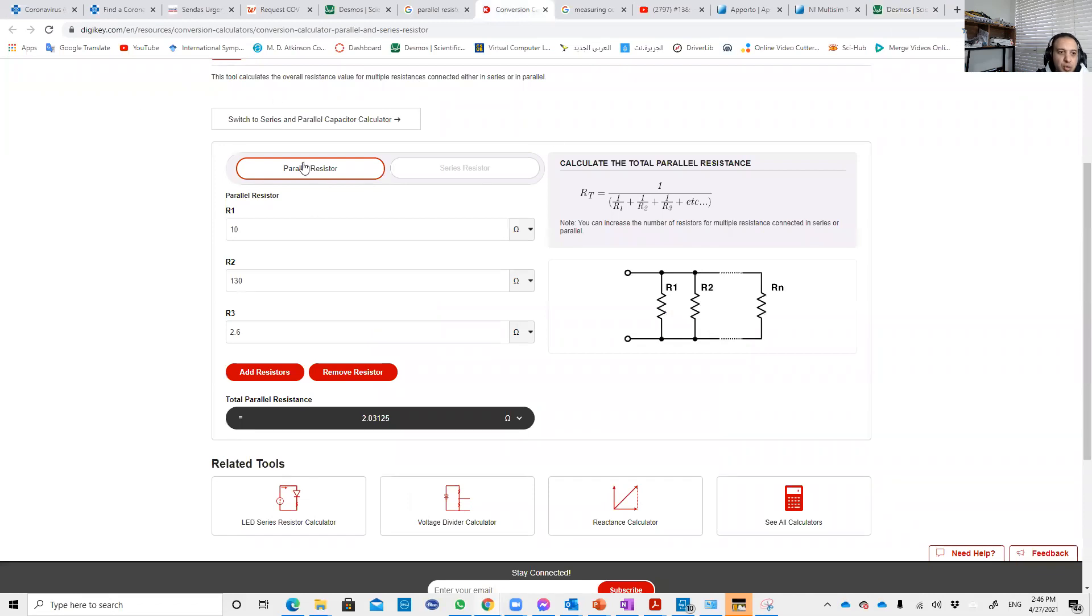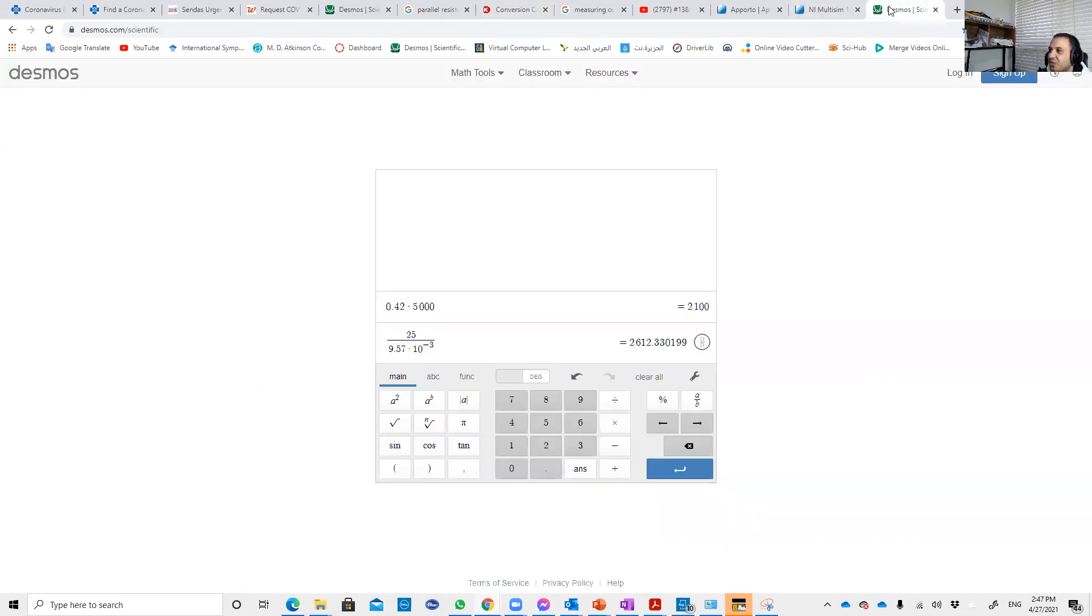So this website will do it for you. You don't need to use the calculator. So 10 kilo ohms, 130 kilo, I did it before, and here is 2.6. So the result is 2.03. What was the measured value for R input? 2.1. It's really close, very close.